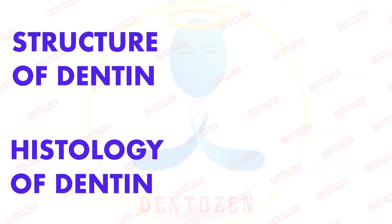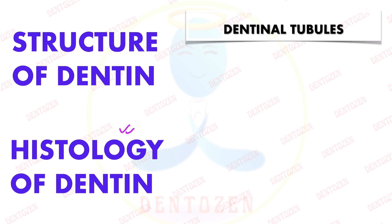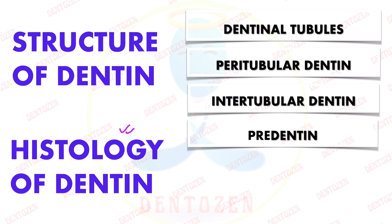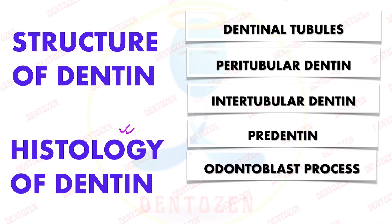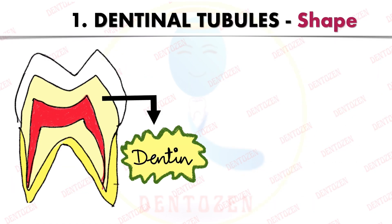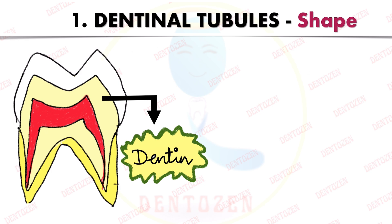Structure of dentine can also be asked as histology of dentine in your exam, where you have to write about six things: dentinal tubules, peritubular dentine, intertubular dentine, pre-dentine, odontoblastic process, and dentinal fluid. Let's start with dentinal tubules first.